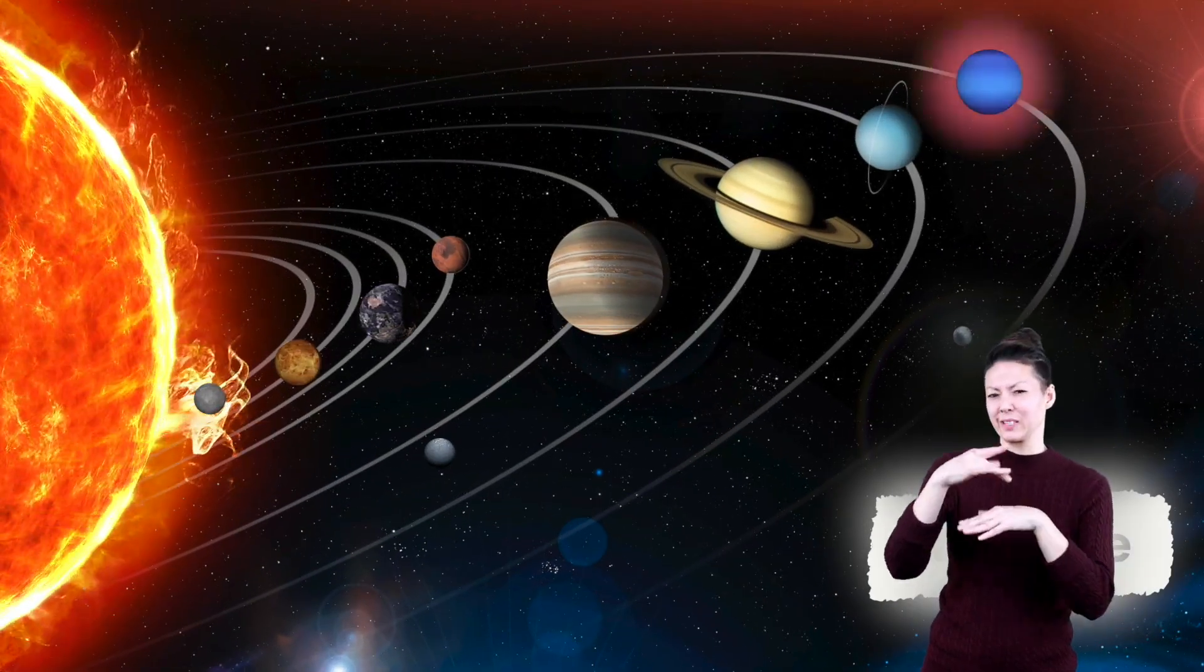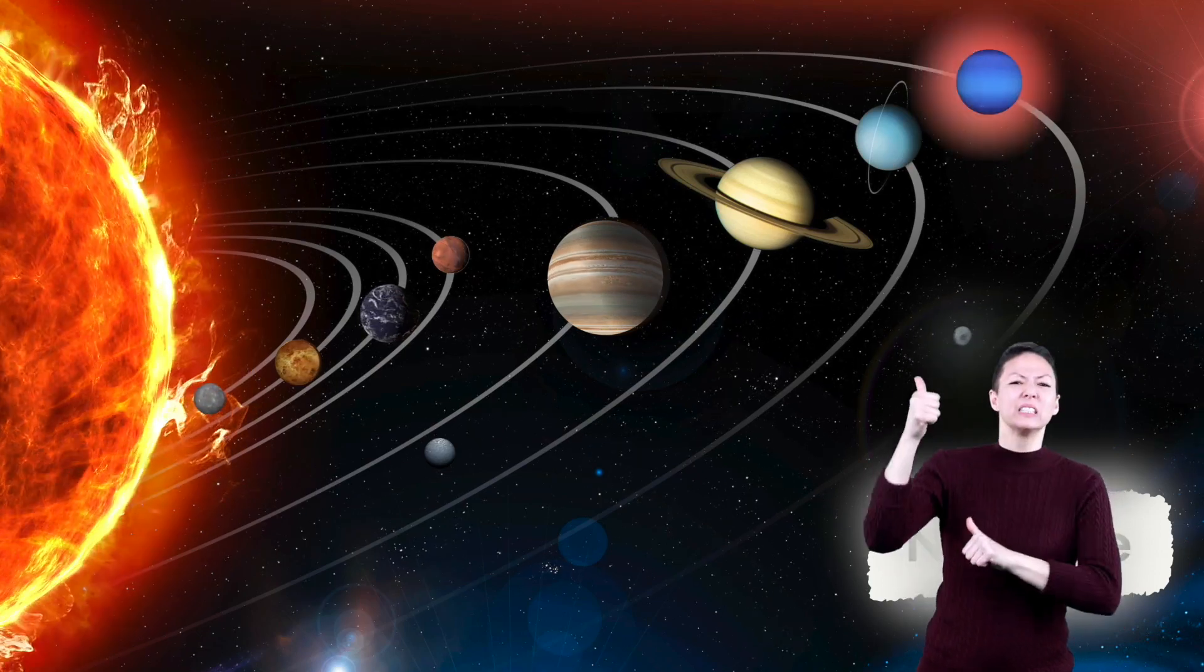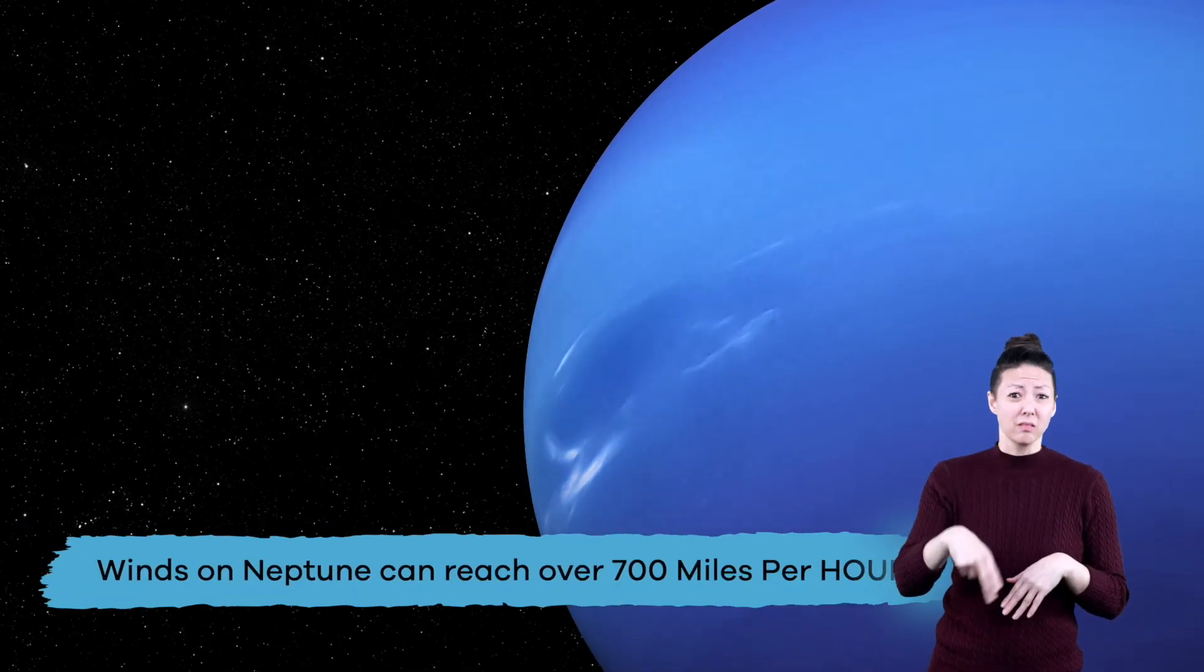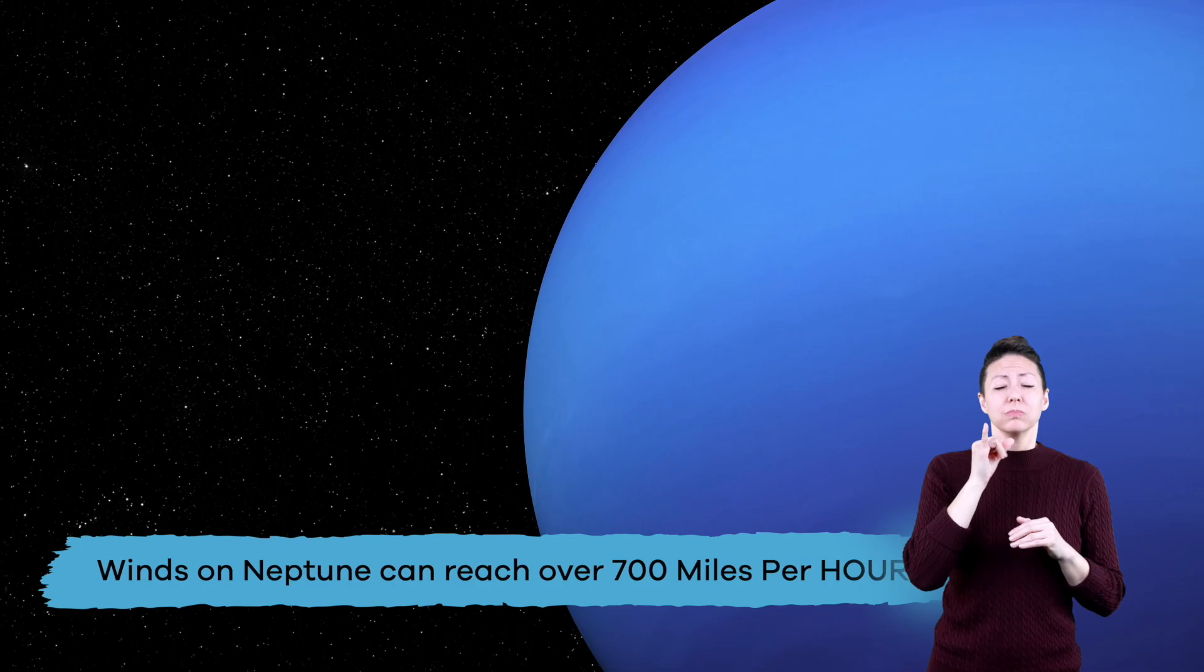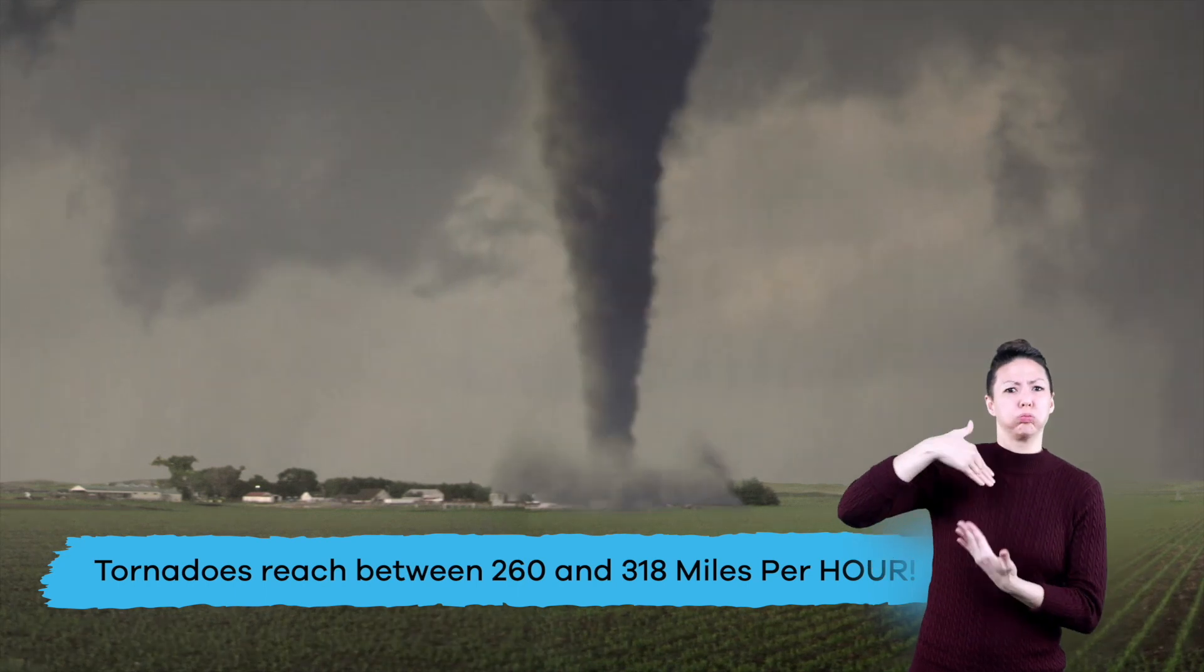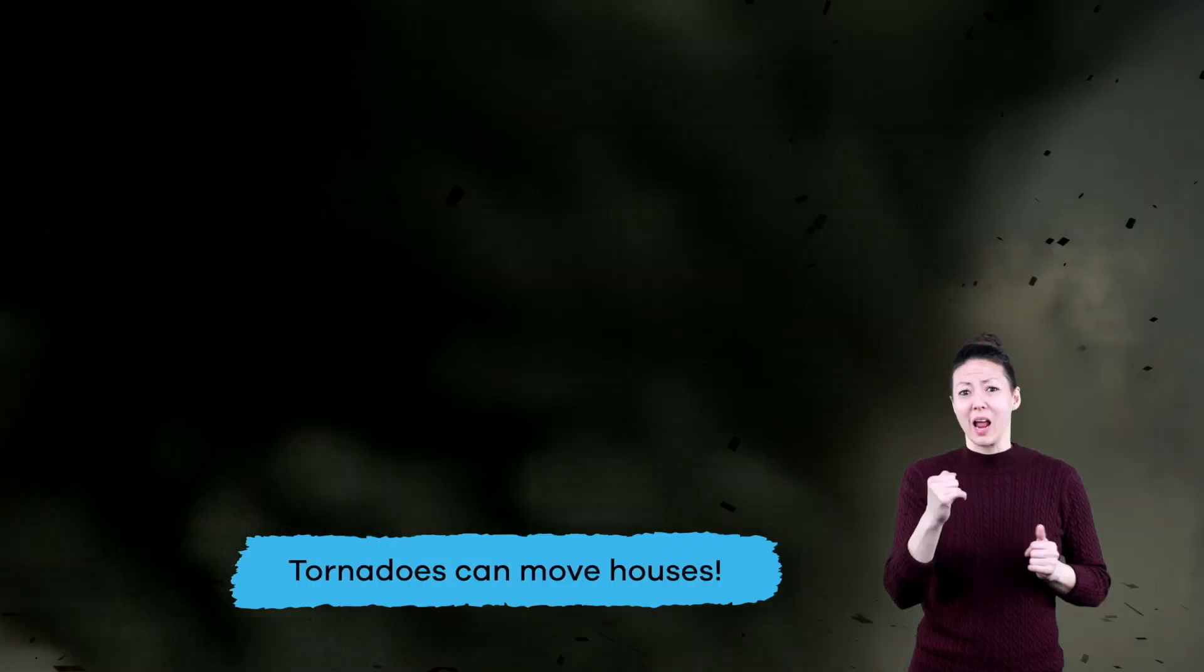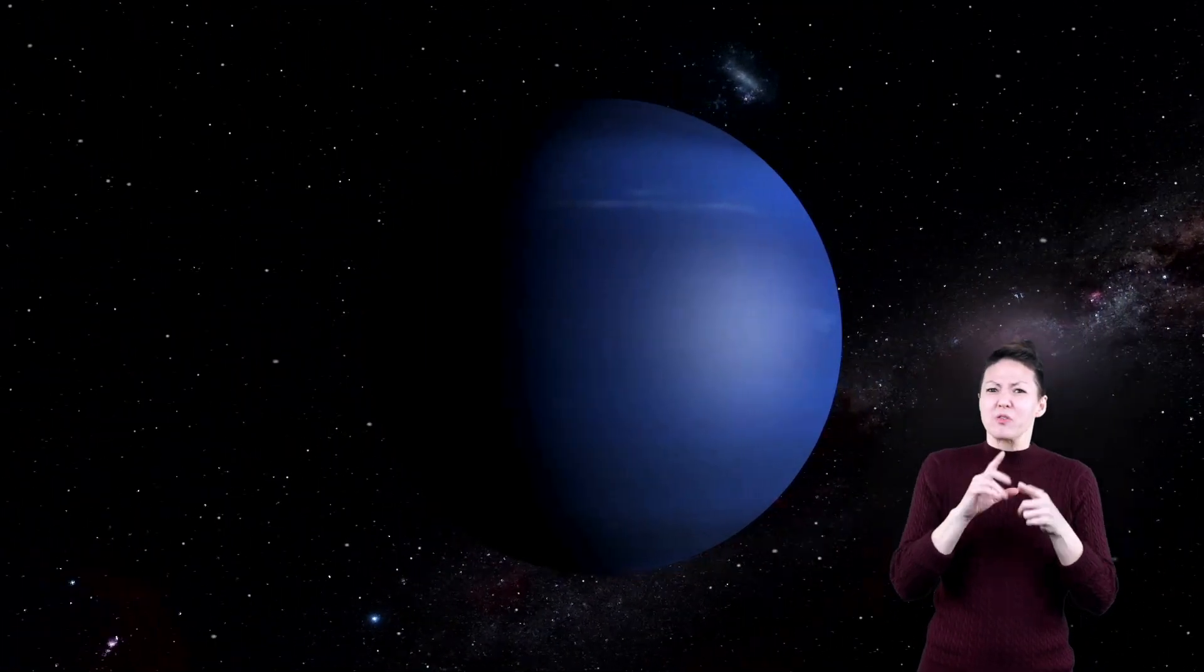Neptune is the farthest planet from the sun. In fact, it is so far away that it is the only planet that we can't see from Earth without a telescope. Neptune is dark, cold, and very windy. Winds on Neptune can reach over 700 miles per hour. To give you an idea just how fast that is, the biggest tornadoes on Earth can reach speeds of about 260 to 318 miles per hour, and they can move houses. With crazy fast winds and freezing cold temperatures, Neptune's probably not the place you want to build your summer home.